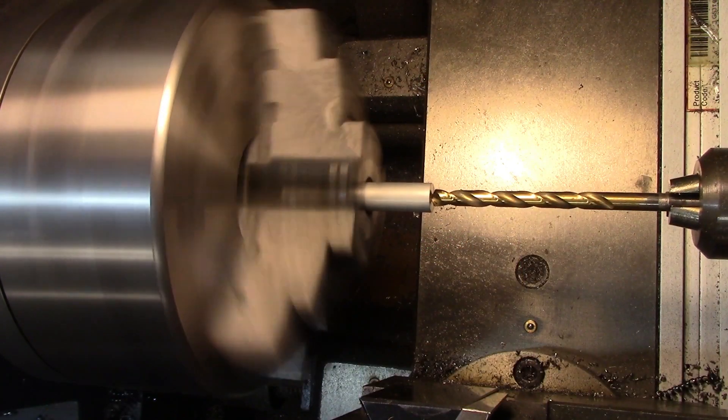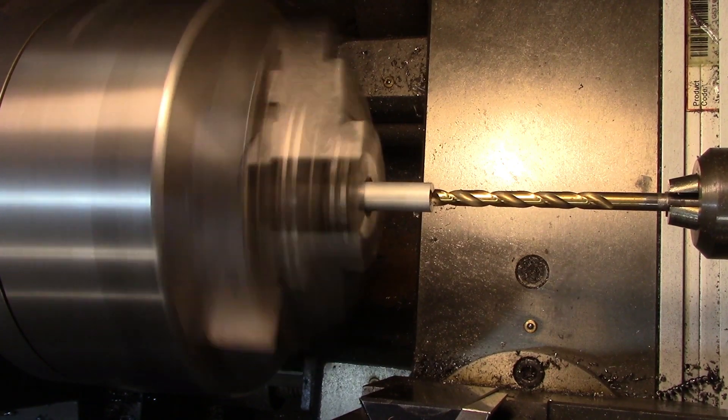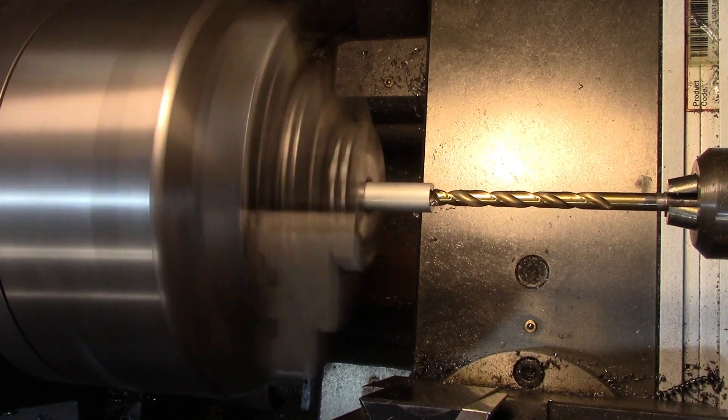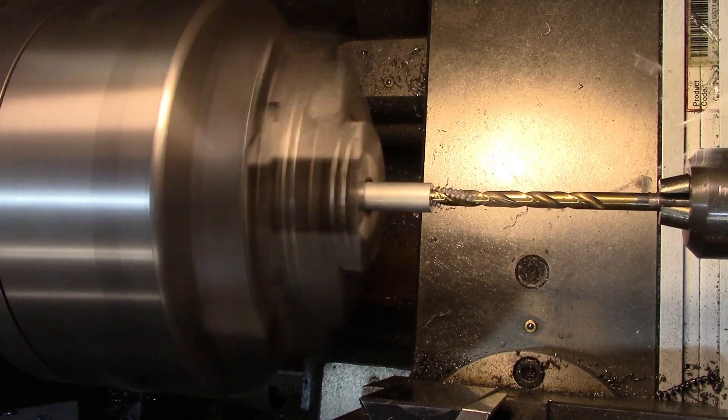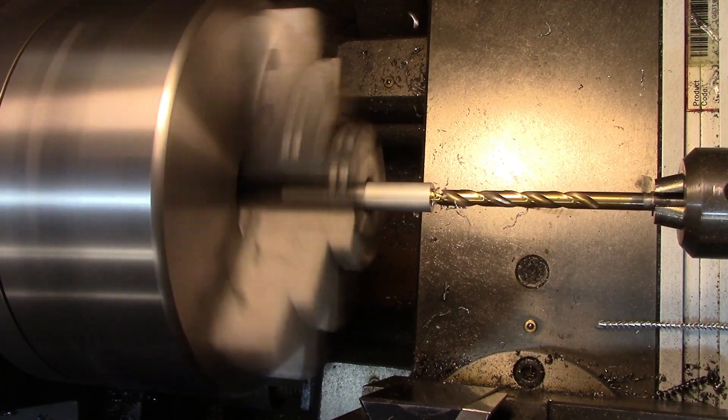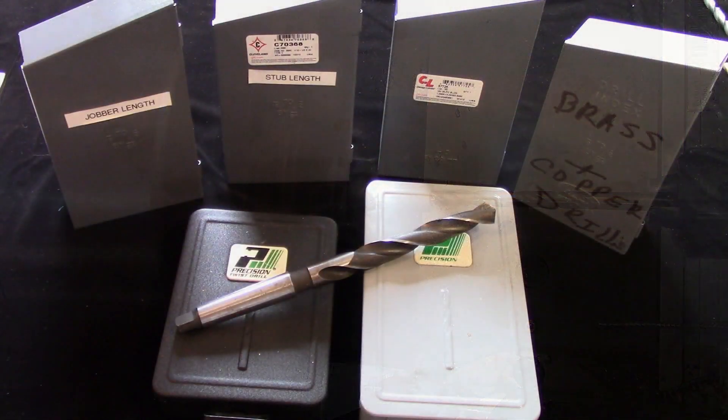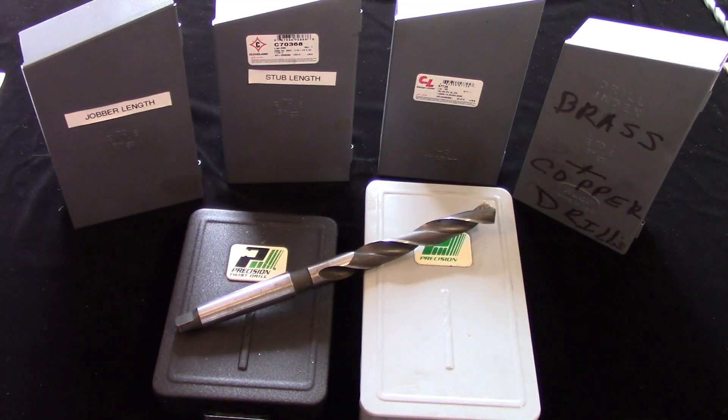You can see this in the chips created by the drill. One cutting edge contacts the material first and cuts more material, creating a wider chip on that side and a narrower chip on the other. This pushes the drill sideways, creating an oversized hole.